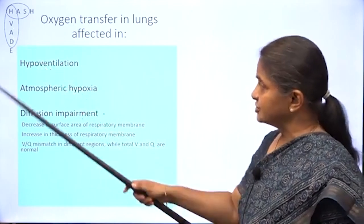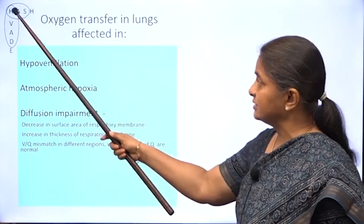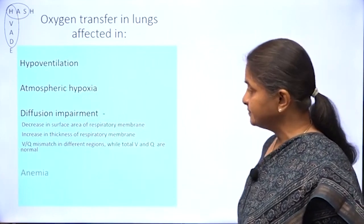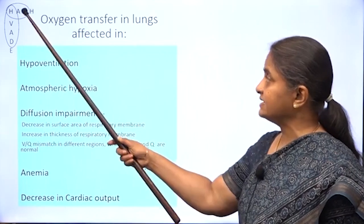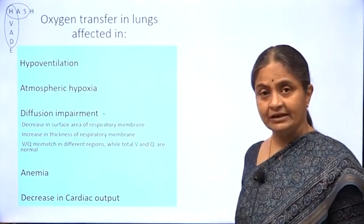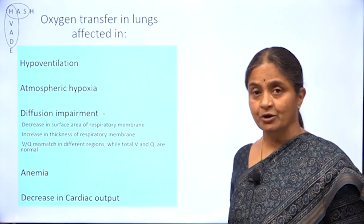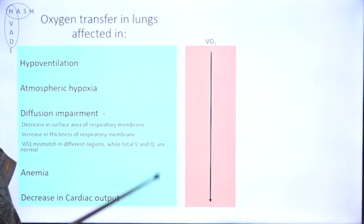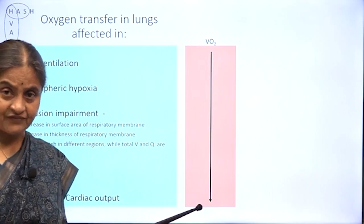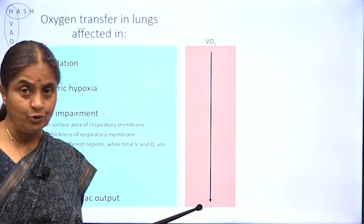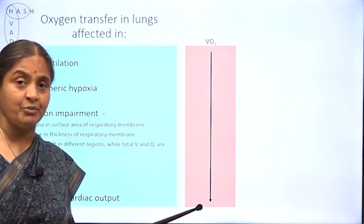In addition to these conditions, oxygen transfer is also affected in anemia and cardiac failure. The S represents cardiac failure and stands for stagnant hypoxia. In all these five conditions, oxygen consumption is affected — VO2 is reduced — and that is what we call tissue hypoxia.